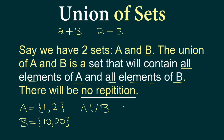So what is A union B? A union B will be a set. It will contain all elements of A, which is 1 and 2, and then all elements of B, which is 10 and 20. So the set containing elements 1, 2, 10 and 20 represents A union B.